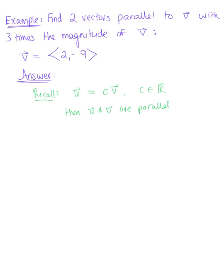Specifically, we want to find two vectors parallel to V with three times the magnitude of V. So what we need to do here is define a vector U as being equal to three times vector V, or three multiplied by <2, -9>. This vector is going to produce a magnitude with three times that of V.